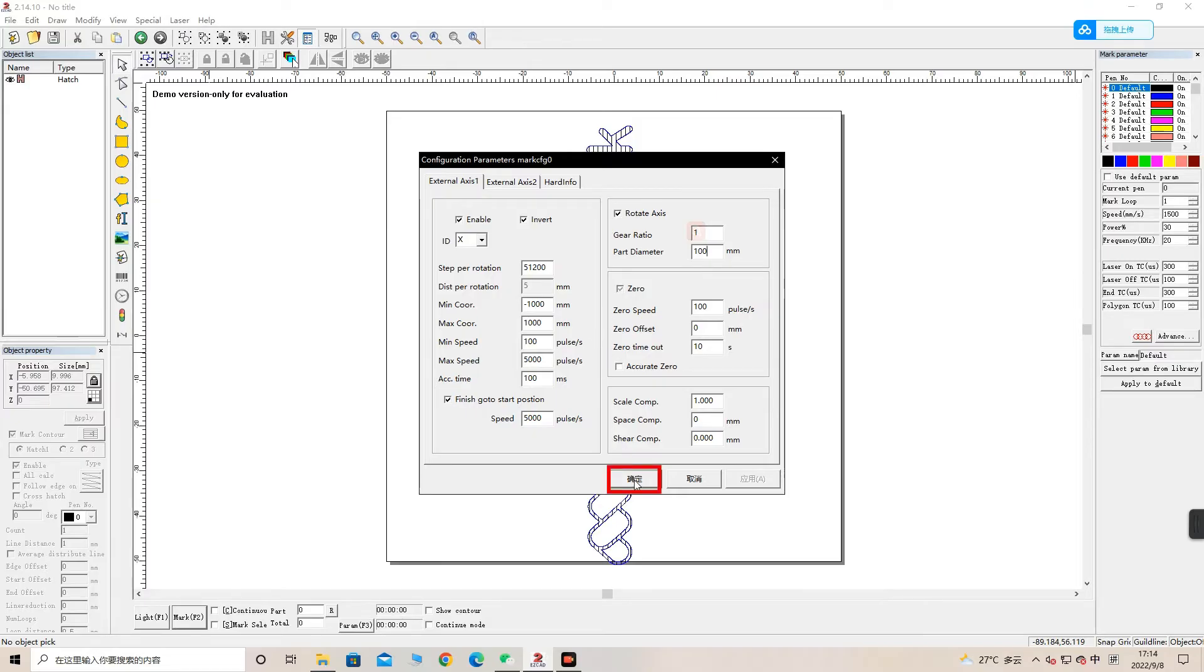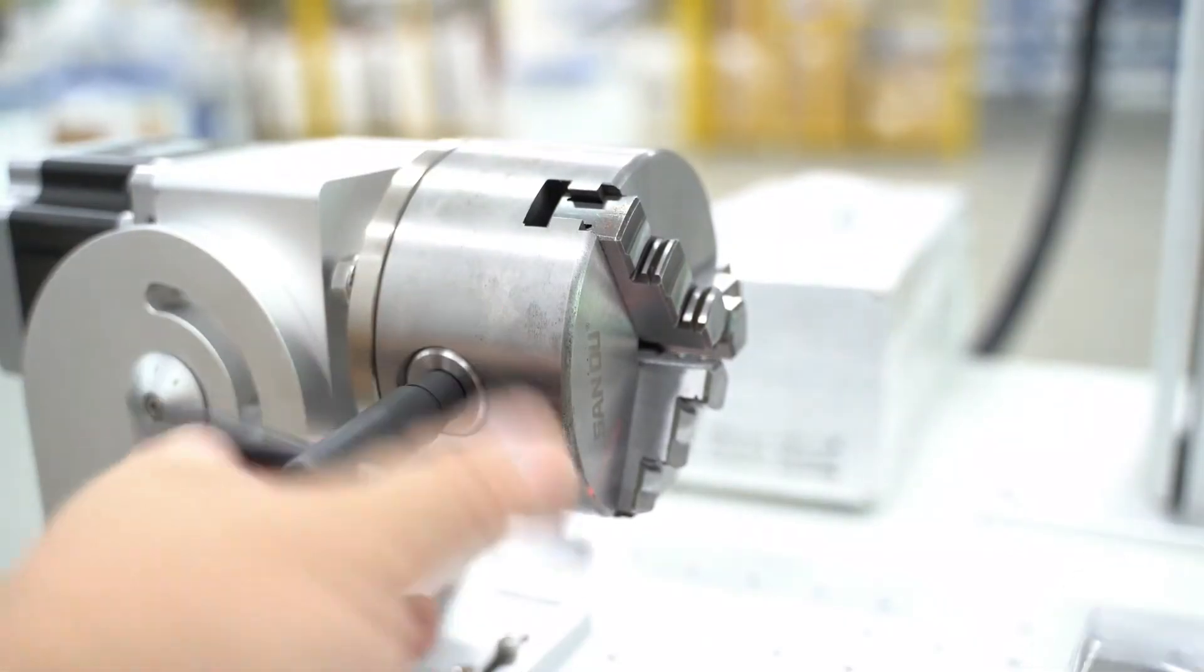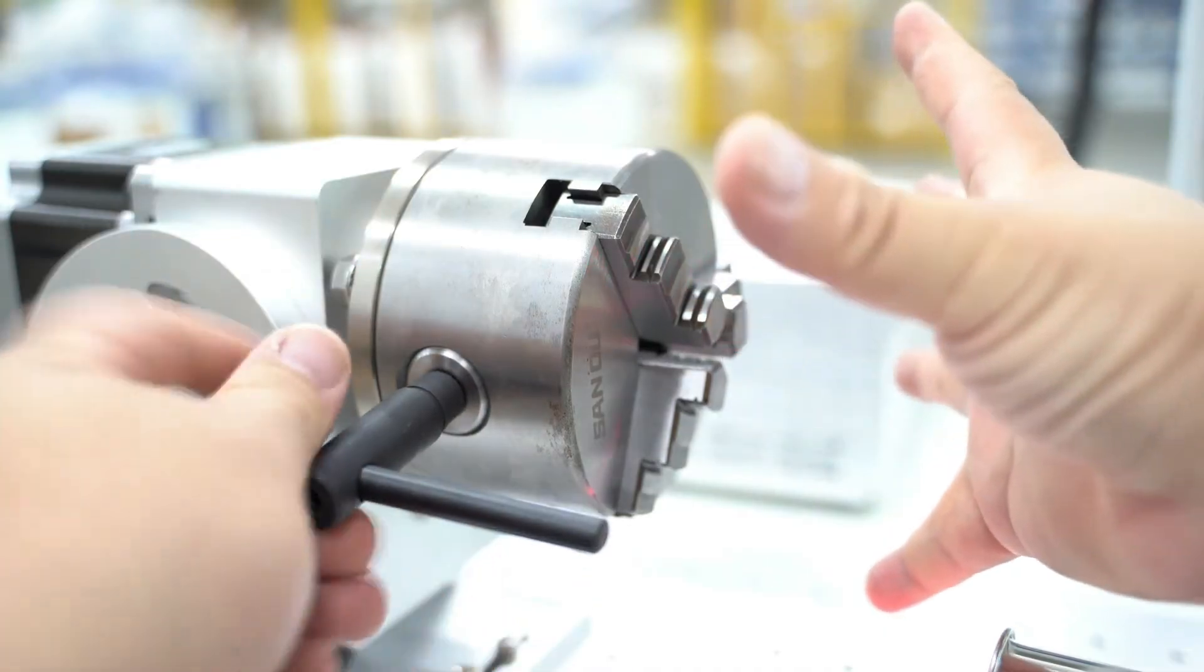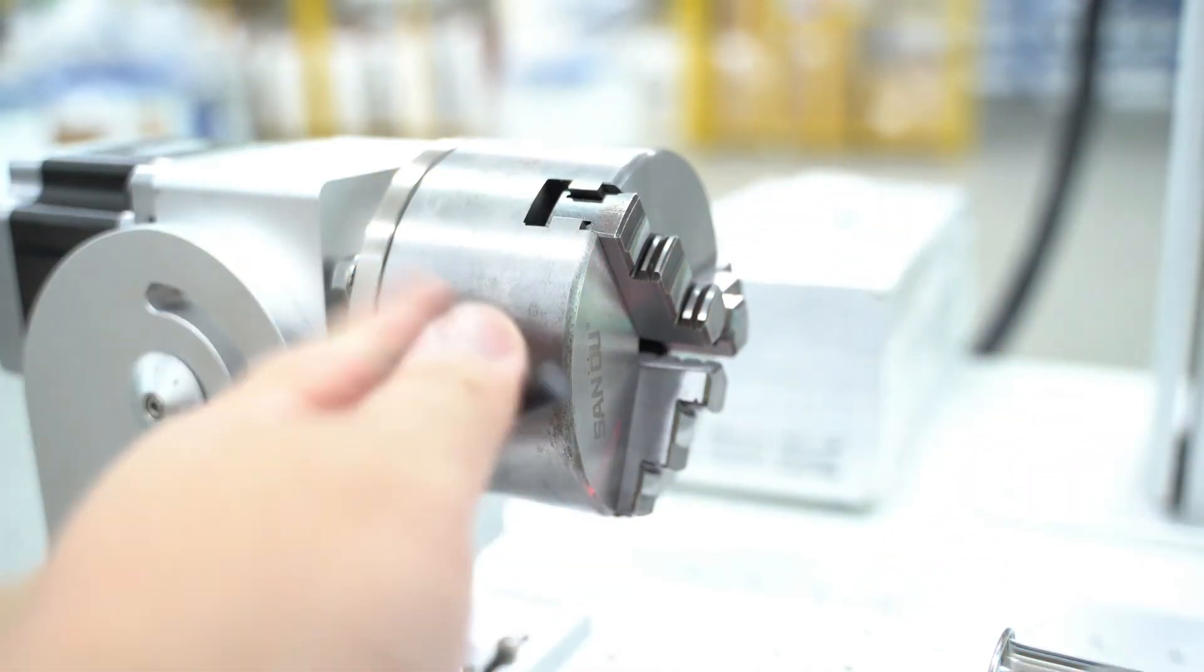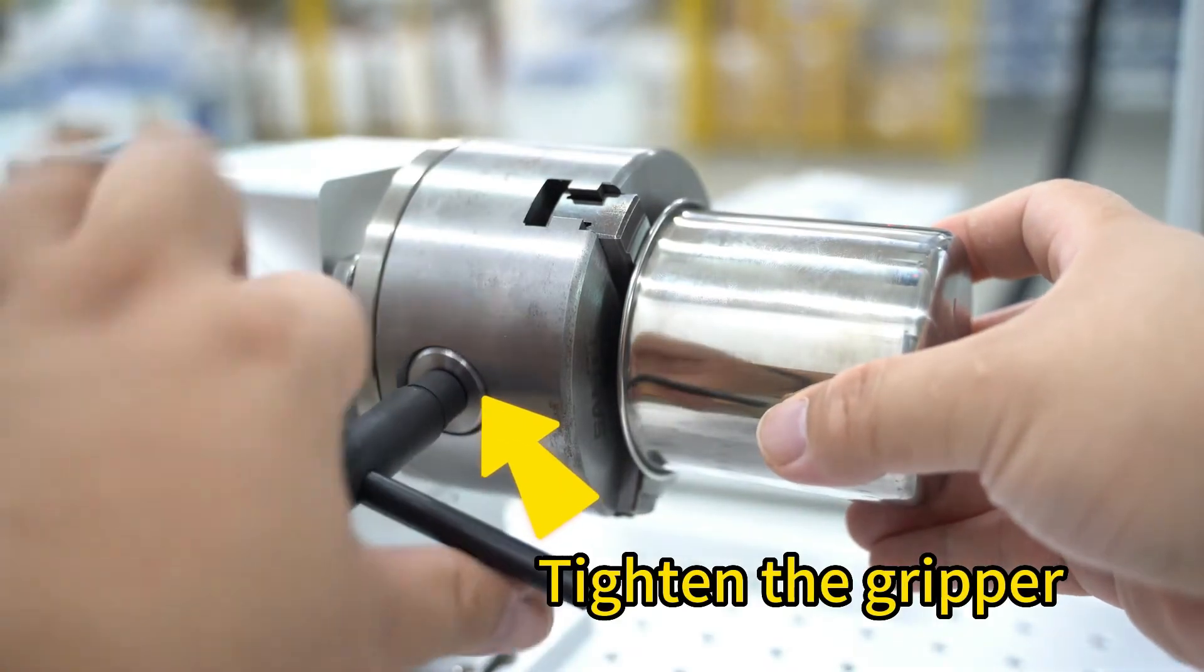Now let's adjust the rotary and fix your cylinder workpiece. There is a rotating knob on the side of the clamp head. Twist it clockwise to tighten the gripper and twist it counterclockwise to loosen the gripper.